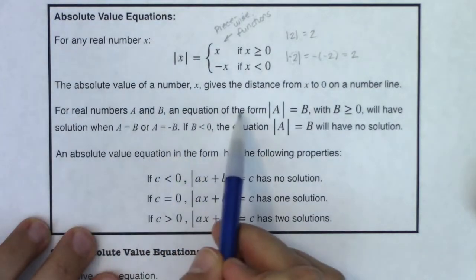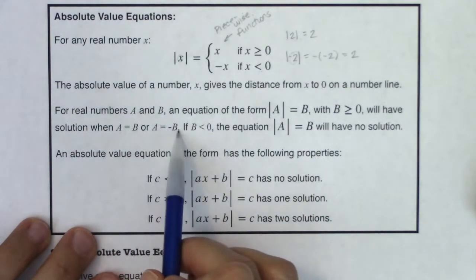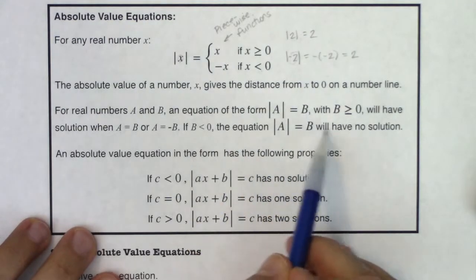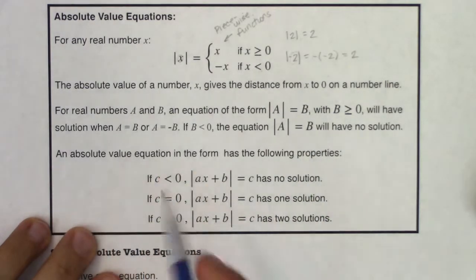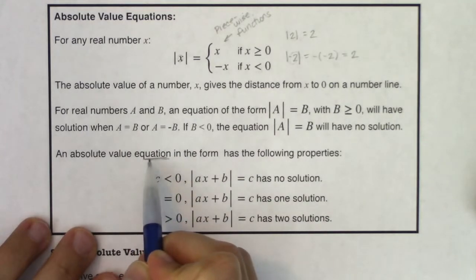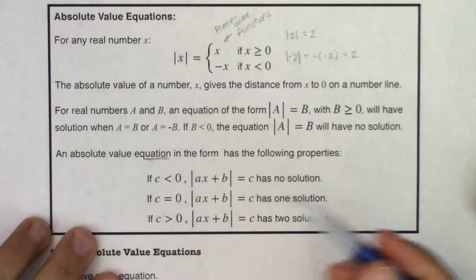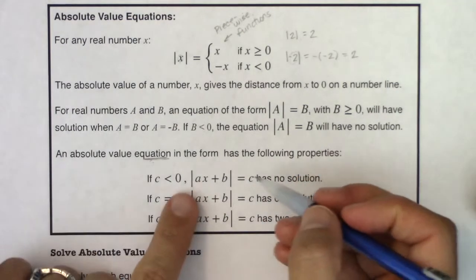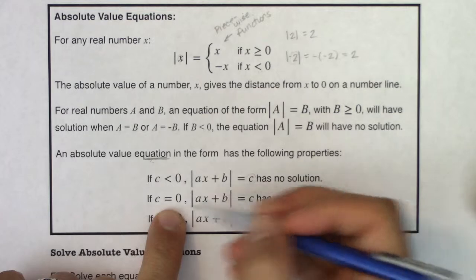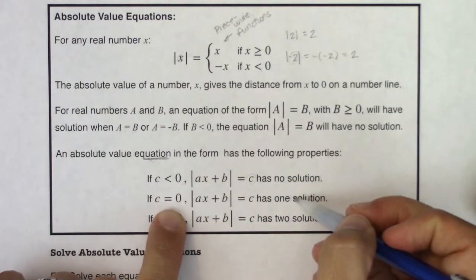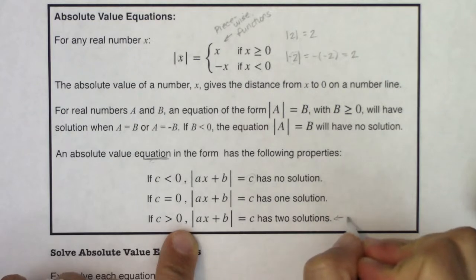For real numbers a and b, an equation of the form |a| = b: as long as b is positive, we'll have solutions where a equals b or negative b. If the number on the right side is less than zero, you'll have no answer — there's no way for an absolute value to equal something negative. If it equals zero, you have exactly one solution. If positive, you have two solutions — that's the most common option.